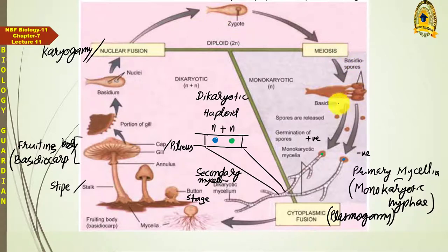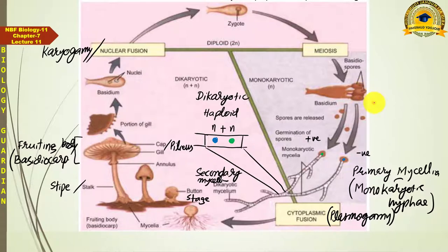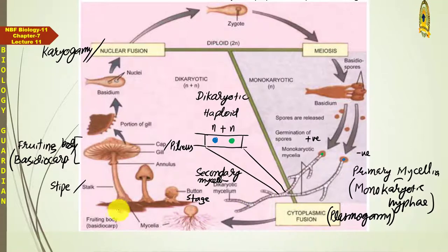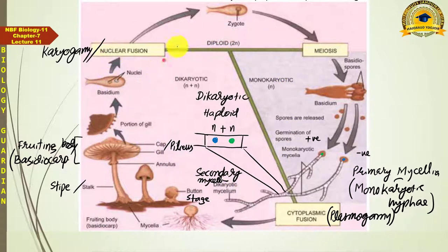Thick walls develop on these four structures — these are called basidiospores. So basidiospores develop on the tip of the gills. When these basidiospores shed and fall on a suitable place, from their germination primary mycelia form again, then secondary mycelia from two primary mycelia, then the whole mushroom develops, nuclear fusion occurs — and this cycle continues, completing the mushroom's life cycle.